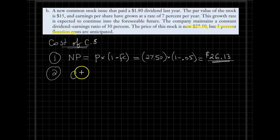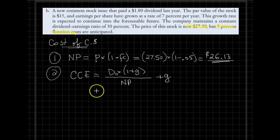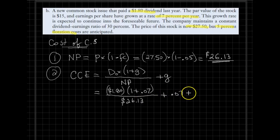In the second step, we calculate the cost of common equity using the dividend growth formula, but the denominator should represent the net price rather than just the market price. D0 (dividends paid) was $1.80, and the growth rate is 7% per year. Dividing by the net price of $26.13 and adding the growth rate yields a cost of common equity of 14.37%.